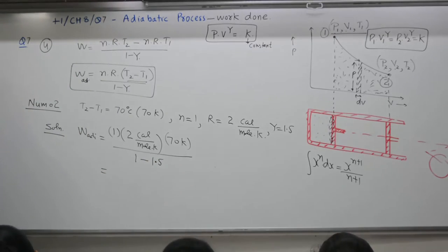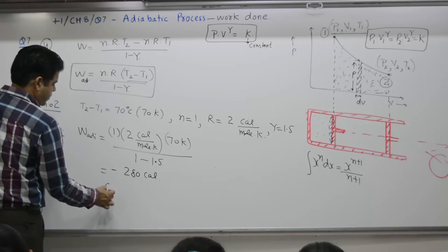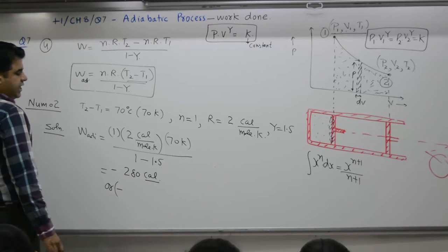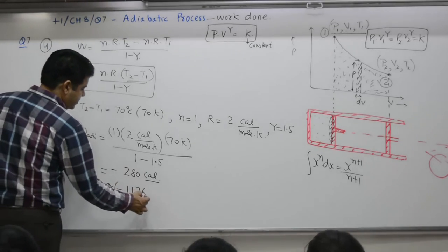N equals R1, R equals 2 calorie per mole per kelvin. Change in temperature 70 kelvin divided by 1 minus gamma. Gamma is 1.5. Find the answer in calorie and joule. In calorie it is minus 280. Minus 280 calorie, or 1 calorie is 4.2 joule. 280 into 4.2, which is 1176 joule.